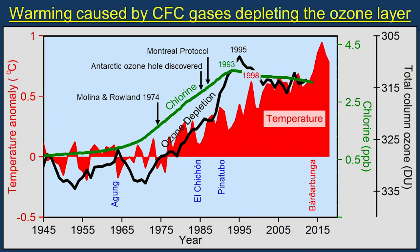Humans had caused global warming beginning around 1975 by manufacturing large amounts of CFC gases. Humans had stopped the increase in global warming by 1998 by substantially reducing the amounts of CFC gases being manufactured. Depletion of the ozone layer caused by CFC gases explains why ozone depletion and surface temperatures began increasing around 1975 and stopped increasing around 1998, why the temperature of the ozone layer decreased during this same period, and why global warming was primarily of minimum temperatures during the winter when ozone depletion is greatest.